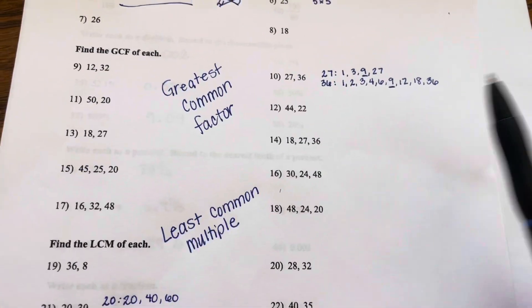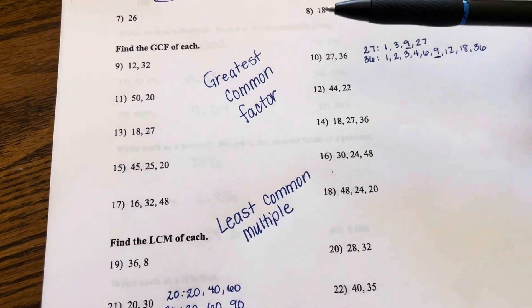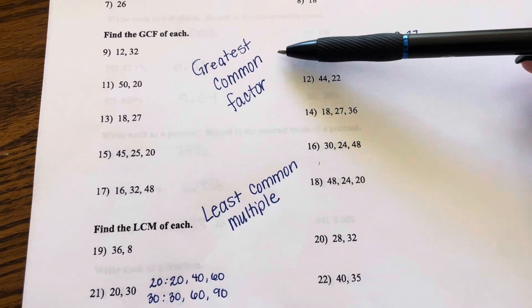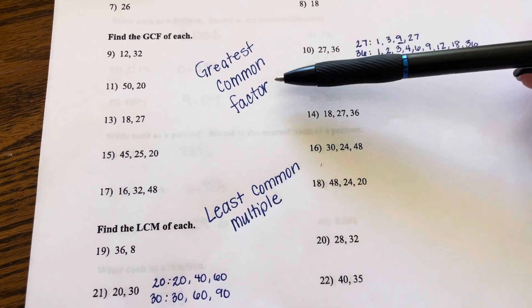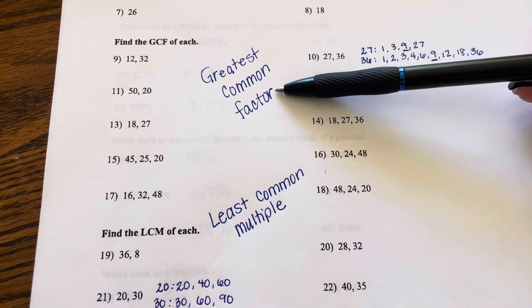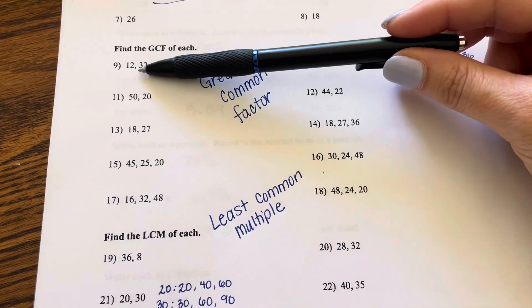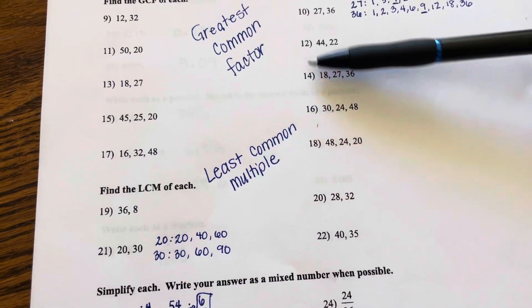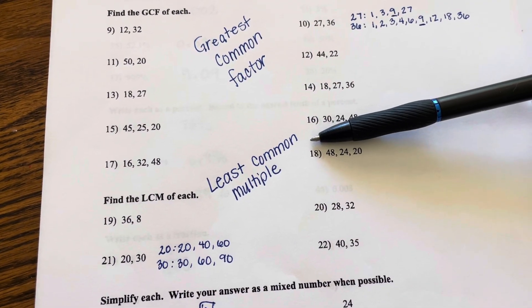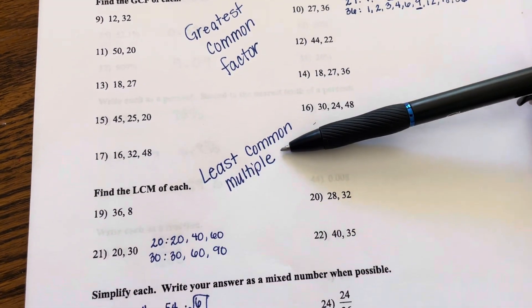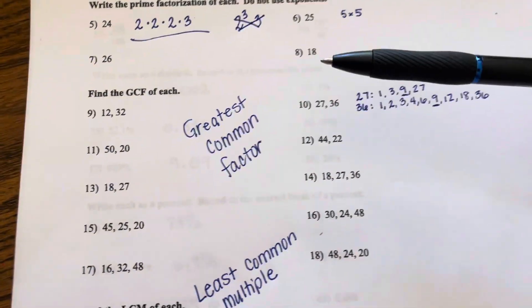And something I find entertaining is the greatest common factor is actually a smaller number than the numbers that we're looking at. Whereas the least common multiple, that is actually going to be a larger number than the numbers that we're looking at.